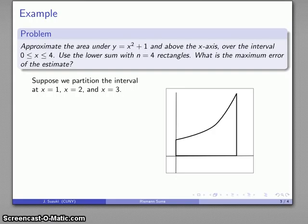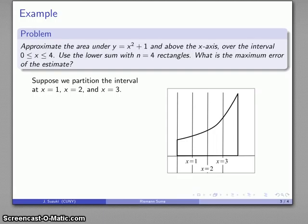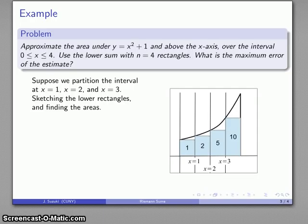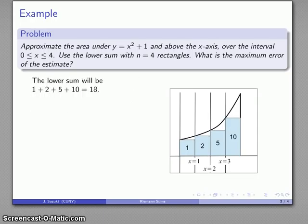I need 4 rectangles, so I need 3 partition points. I'm going to partition at x equals 1, 2, and 3, giving me 4 regions. I can find the lower rectangles and the areas of all those lower rectangles, so my lower sum is just going to be the sum of all those areas, which is going to be 18.